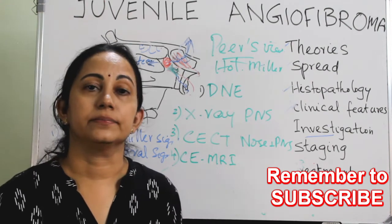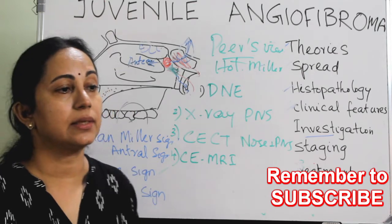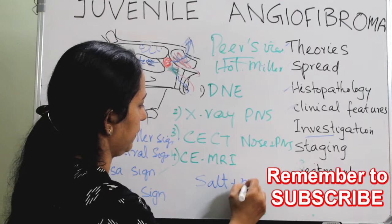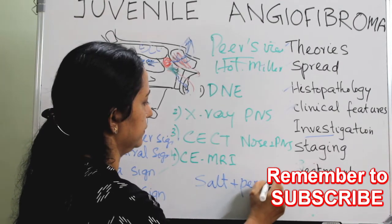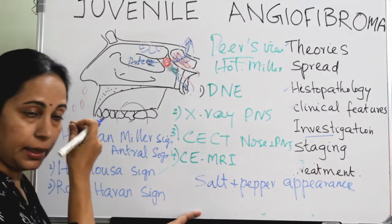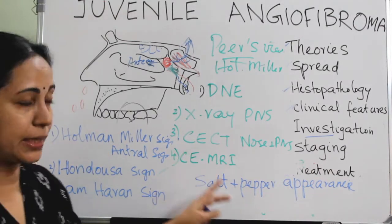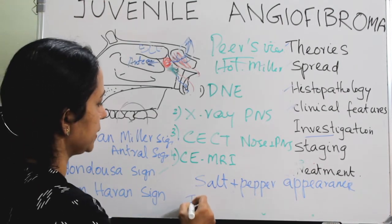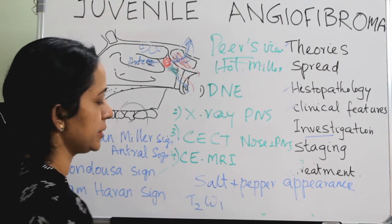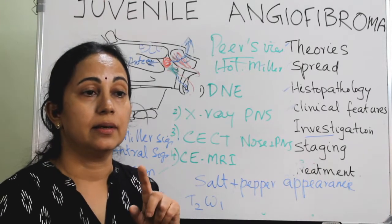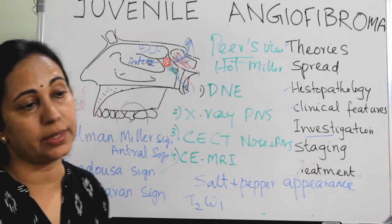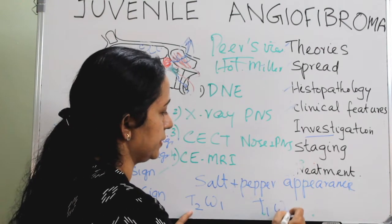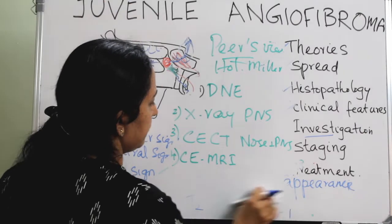In any vascular tumor, not only JNA, you can see the salt and pepper appearance on MRI. This is because in T2-weighted images you get flow void areas, and in T1-weighted images you get high-intensity or contrast-enhanced signals. So flow void on T2 and contrast enhancement on T1 weighted images give this salt and pepper appearance.